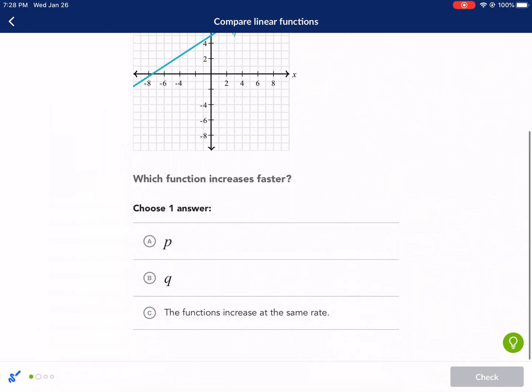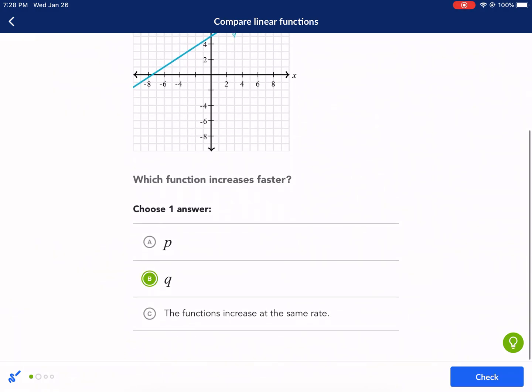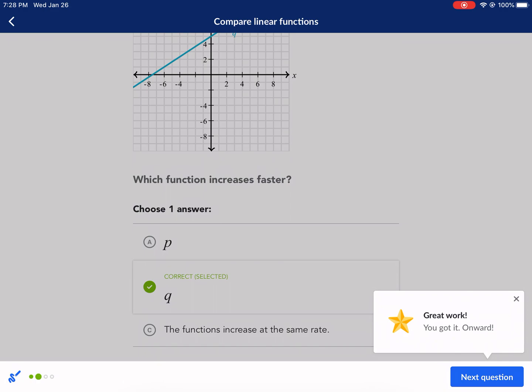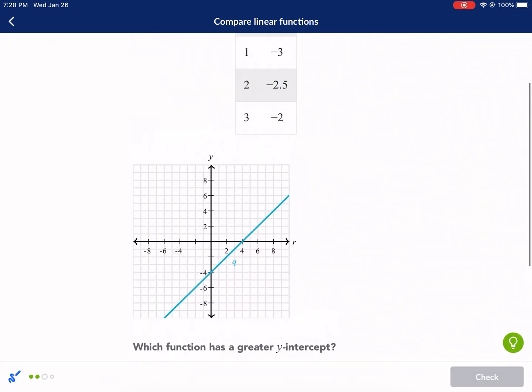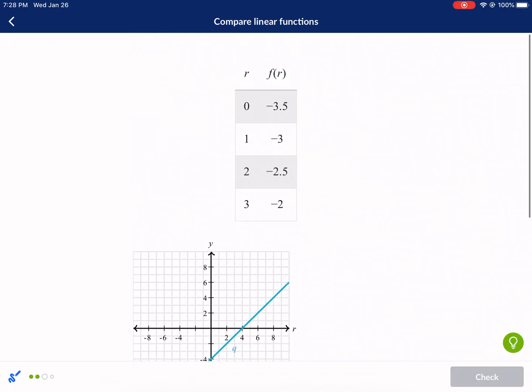So basically I need to know which one of these is a bigger number, a bigger decimal. So I know this decimal is about 0.67. This decimal right here, 2 divided by 5, is 0.4. So clearly this guy is the faster increaser. He has a bigger number, which means bigger slope, which means increasing faster. So that is Q, bigger slope. Next question.